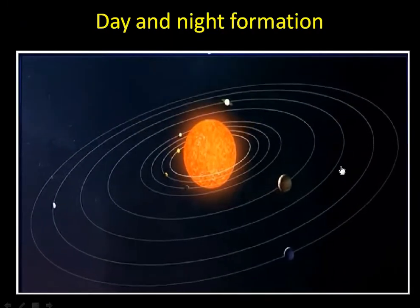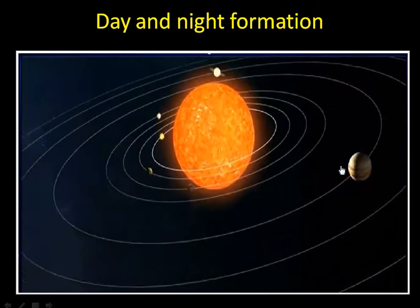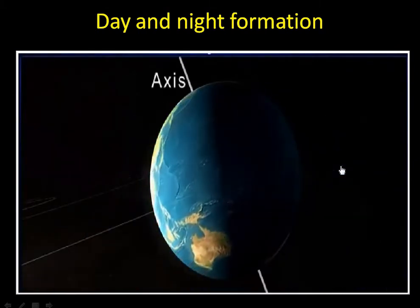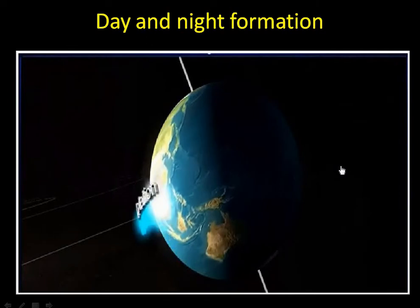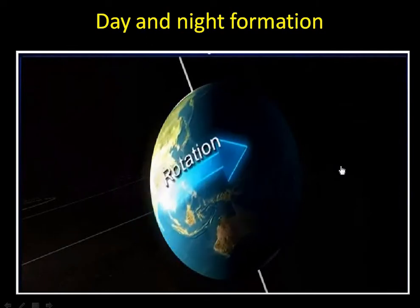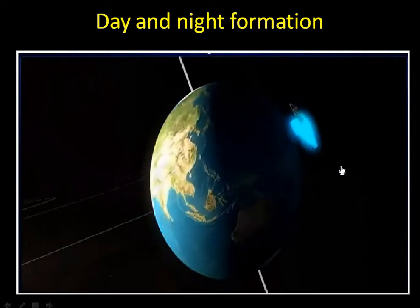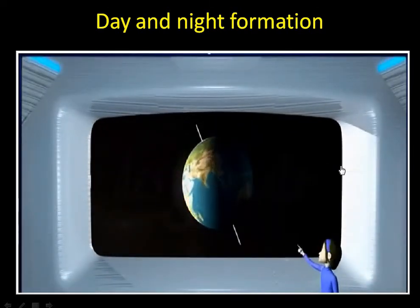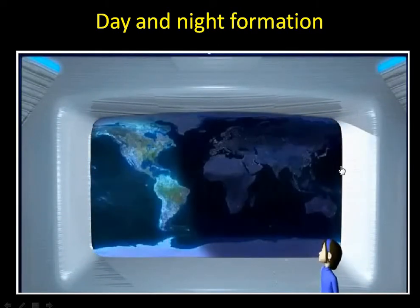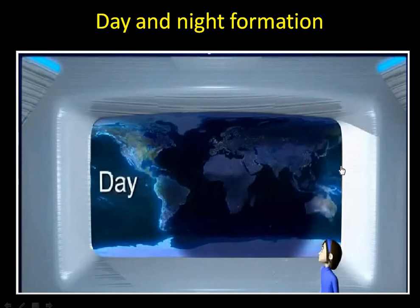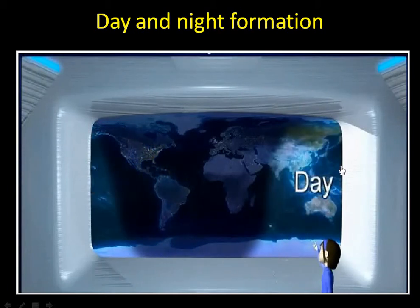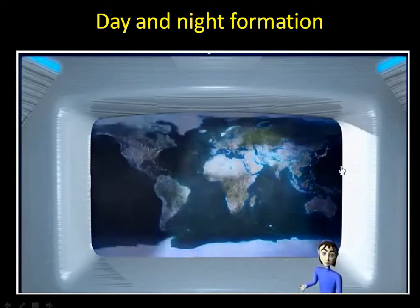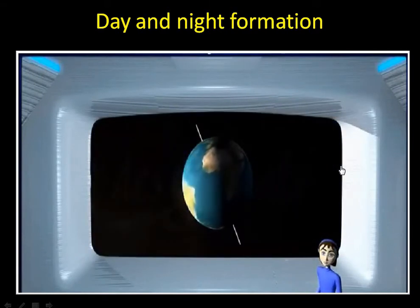All planets, including the earth, revolve around the sun, and all these planets do rotate on their own respective axes. This rotation results in day and night on the earth. The world time zone map shows that it is daytime in some continents but not in others. How does this happen?